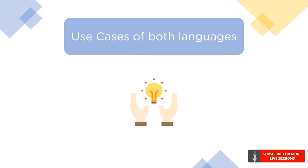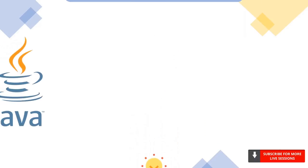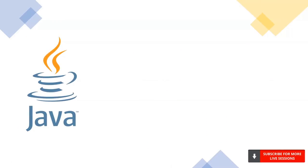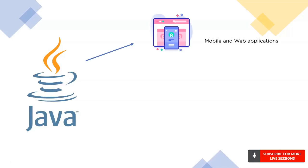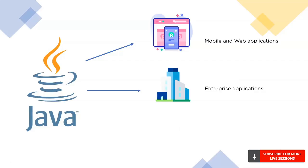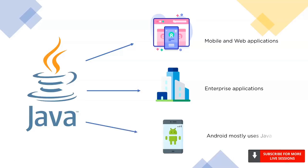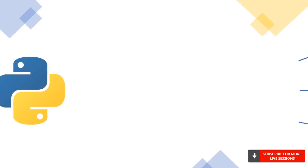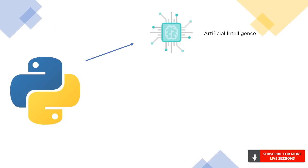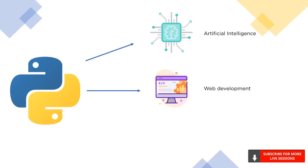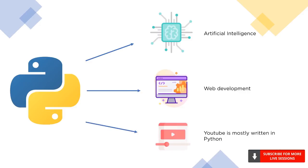Now let's see where these languages are commonly used. Java is commonly used for developing web and mobile applications and is extensively used in enterprise applications because of its stability and the large number of features it provides for business applications. Android applications are mainly developed using Java. Python is very popular in the field of artificial intelligence. It is also used for web development, mostly for the backend part of an application — YouTube is mostly written in Python.